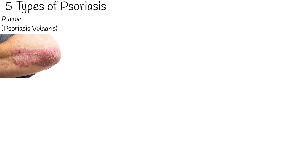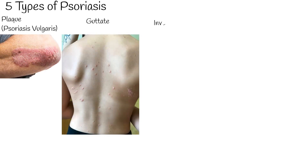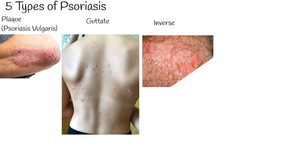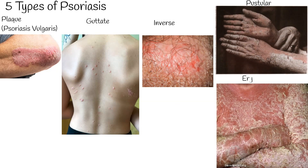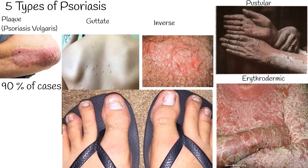Psoriasis varies in severity from small, localized patches to complete body coverage. There are five main types of psoriasis: plaque, guttate, inverse, pustular, and erythrodermic. The most common type is plaque psoriasis, also known as psoriasis vulgaris, which makes up about 90% of cases.